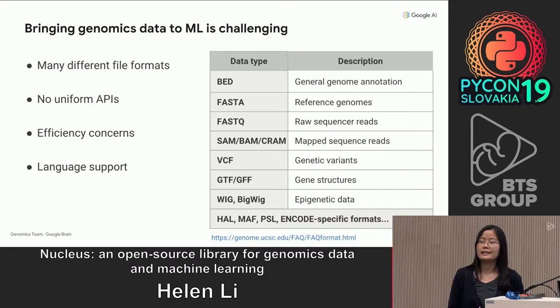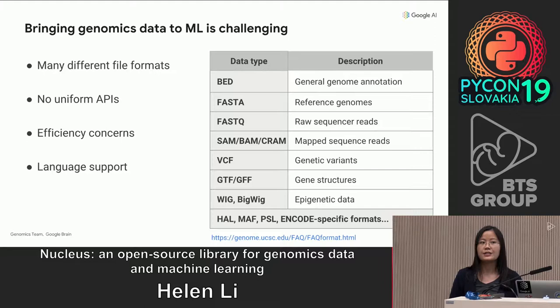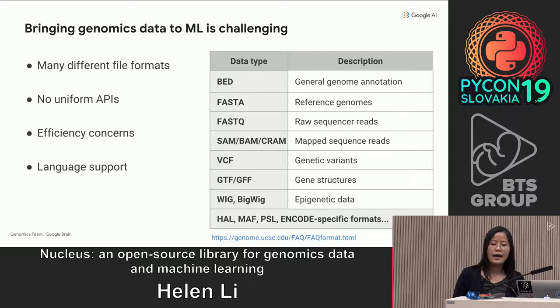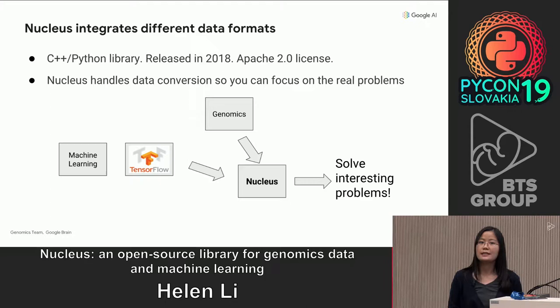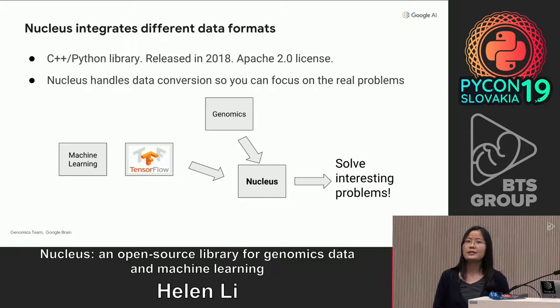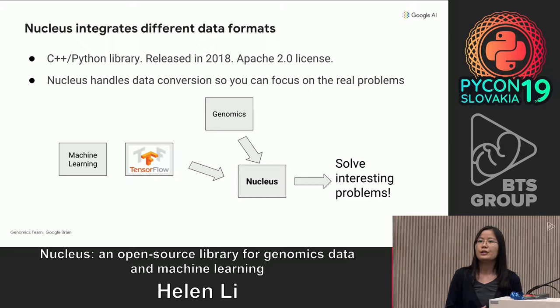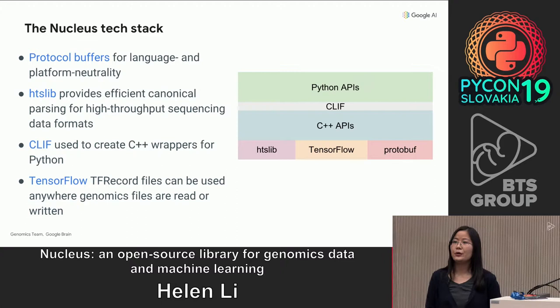Let's take a look at why bringing genomics data to machine learning is challenging. One major difficulty is that there are many different file formats. This table here shows a subset of these file formats — they have various amounts of support and no uniform APIs. There are also concerns on efficiency and language support. In particular, we want to combine the expressiveness of Python with the efficiency of C++. To address these challenges, we developed Nucleus, a C++ and Python library. It was first released last year and has a fully open license. Nucleus handles data conversion and integrates genomics data into TensorFlow, so you can focus on solving challenging problems using machine learning rather than parsing data formats.